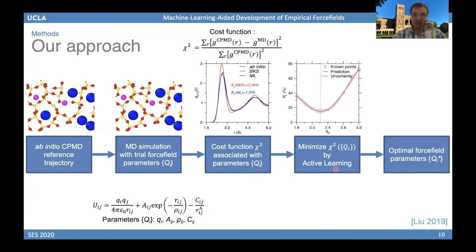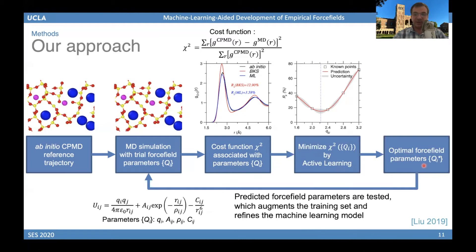The active learning method predicts at each step what it thinks is the optimal value for the force field parameters. We then test those parameters, compute the resulting pair distribution function, and recompute the cost function. This new combination of parameters and cost function value increases the size of our dataset, and we use those new data to refine the machine learning model that maps force field values to the corresponding cost function. We keep prescribing new optimal values until convergence and until we find the global minimum.